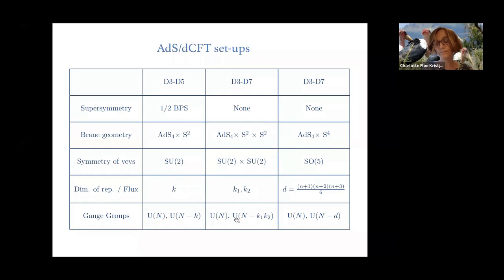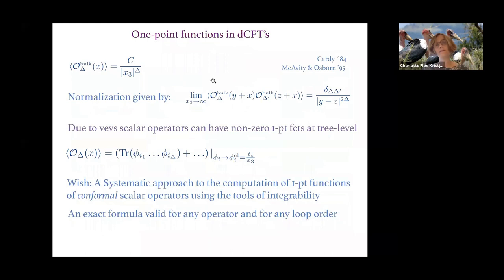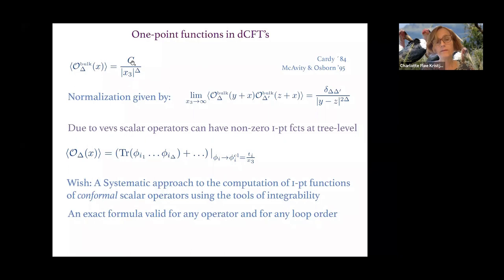In these defect setups one can have novel types of observables, and I will study one-point functions mainly from the gauge theory side. Introducing a defect gives a new scale — the distance from the defect — and the behavior of one-point functions can be inferred from symmetries. It was established that the one-point functions of bulk operators are confined to the form C/x3^Δ, where Δ is the conformal dimension, x3 is the distance to the defect, and C is a structure constant we need to determine.